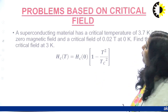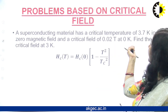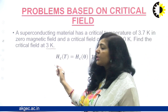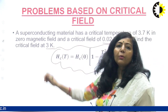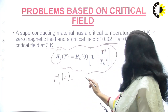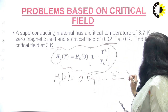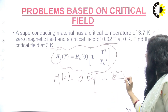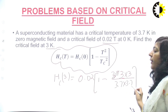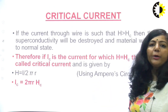For another problem: given critical temperature 3.7 Kelvin and Hc0 = 0.02 T, find the critical field at 3 Kelvin. Applying the formula: Hc(3) = 0.02 × (1 − 3² / 3.7²) = 0.02 × (1 − 9 / 13.69). Simplifying gives the critical field at 3 Kelvin. This is the method to solve problems based on critical magnetic field.